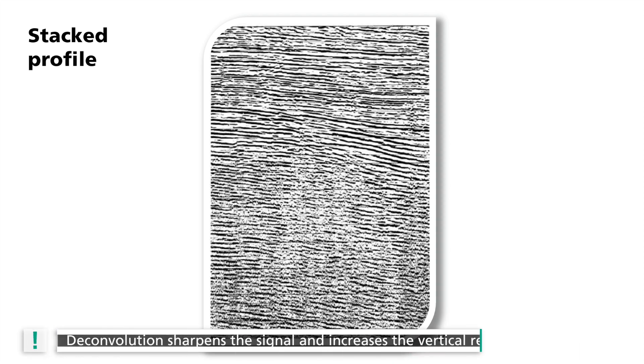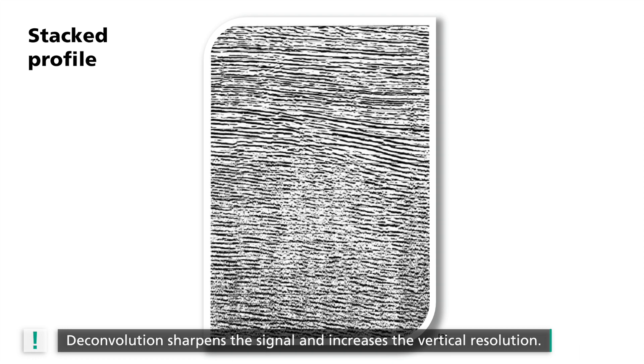For the seismic waves, the same applies as for the light waves. They are disturbed as they travel through the Earth and therefore reveal only a blurred image of the subsurface. The aim of deconvolution is to sharpen the signal in the seismic profile. In this way, the individual reflectors can be better distinguished and vertical resolution is increased. The deconvoluted profile in this example reveals clearer structures thanks to the sharper signals.